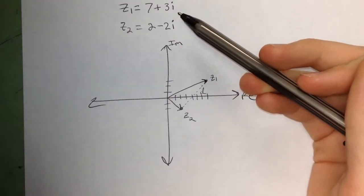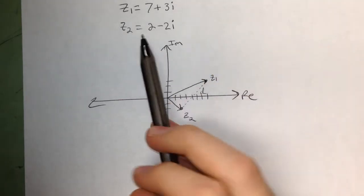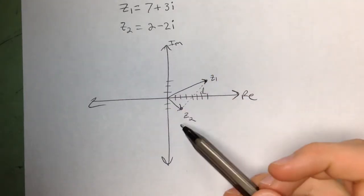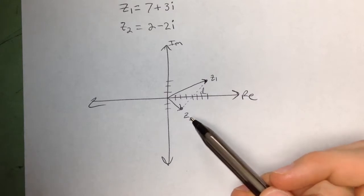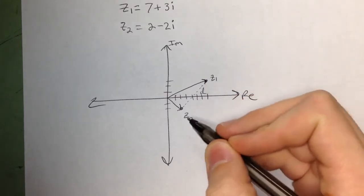So here I've graphed a complex number z1, which is equal to 7 plus 3i, and z2 equals 2 minus 2i. I've graphed them both here on the complex plane, and we're interested in knowing this distance between them.